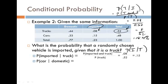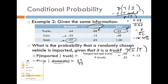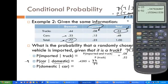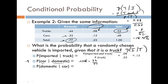Here's another question: what is the probability that the vehicle is a car, given that it's domestic? We take the domestic cars (33%) and divide by the total domestic vehicles (77%). That gives us 33 out of 77, which comes out to approximately 0.4286, or about 42.86%.